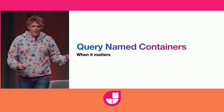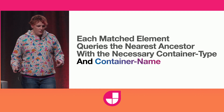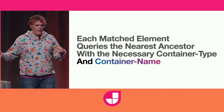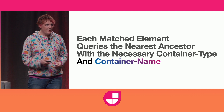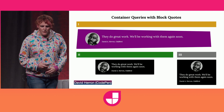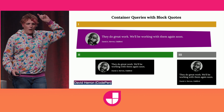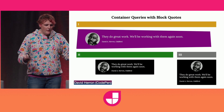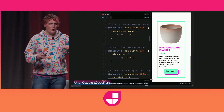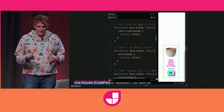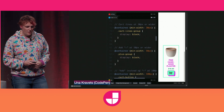When it matters, we can query named containers. We can say: I want to query specifically the card container. That changes the algorithm a little bit — each matched element queries the nearest ancestor with the necessary container type and name. My colleague David Heron showed the same block quote in three different containers. This one by Una Kravits shows a bunch of nested containers within a single card: the button changed, the icon changed, the card changed — everything changes as it's resizing.